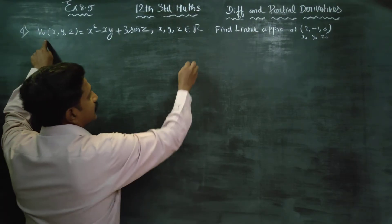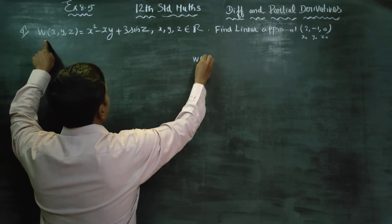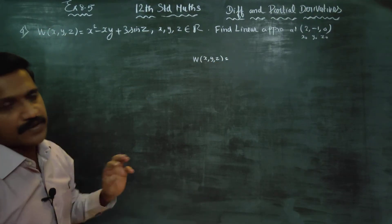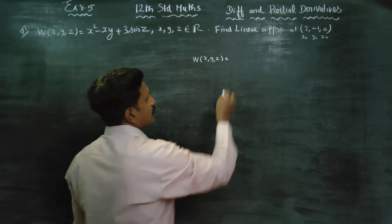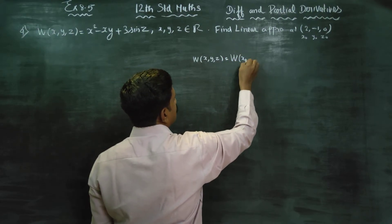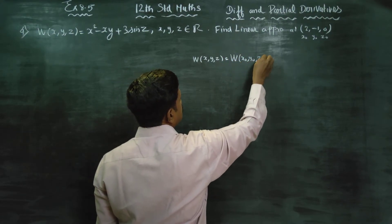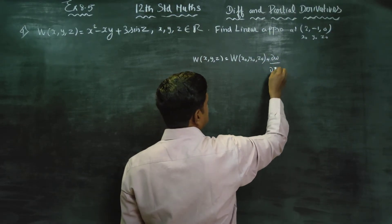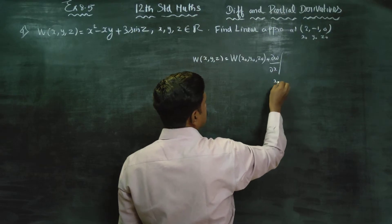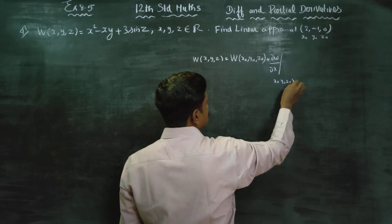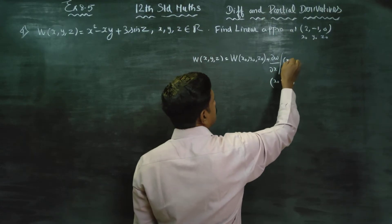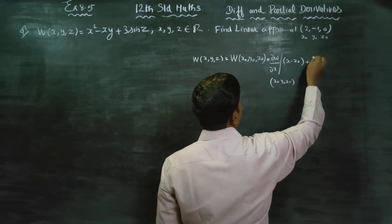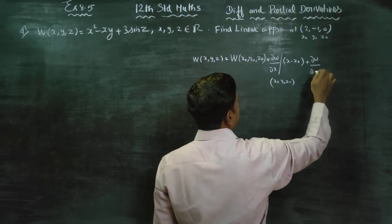Linear approximation of W(x, y, z). The formula is: W(x₀, y₀, z₀) plus (∂W/∂x) at (x₀, y₀, z₀) times (x minus x₀), plus (∂W/∂y) at (x₀, y₀, z₀) times (y minus y₀), plus (∂W/∂z) at (x₀, y₀, z₀) times (z minus z₀).